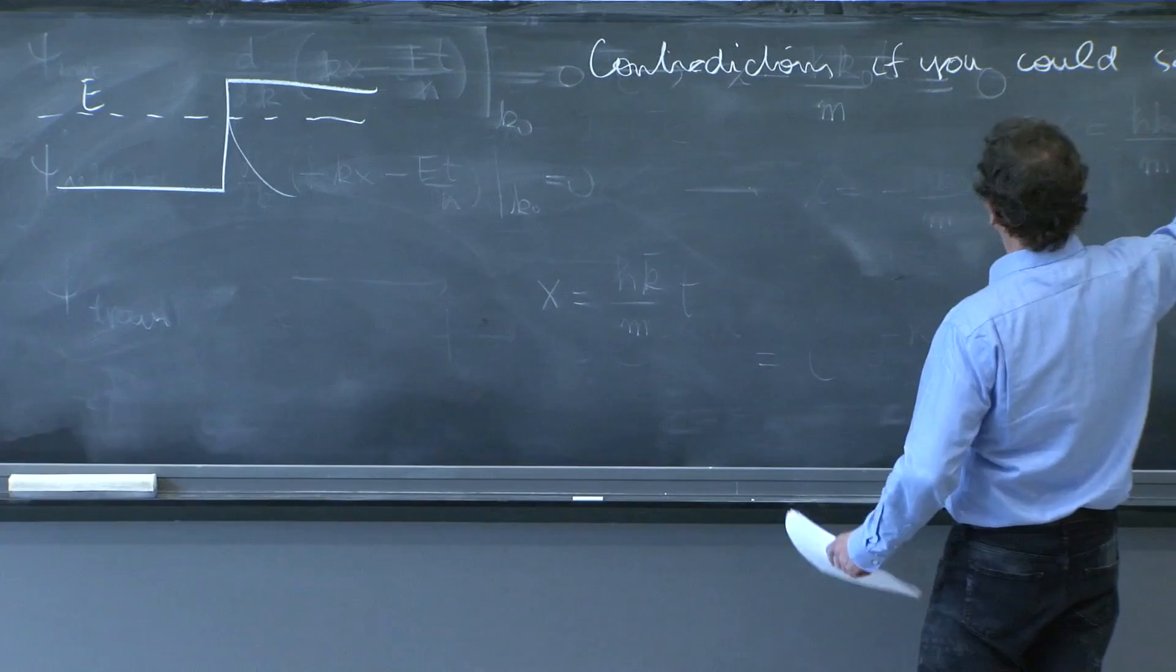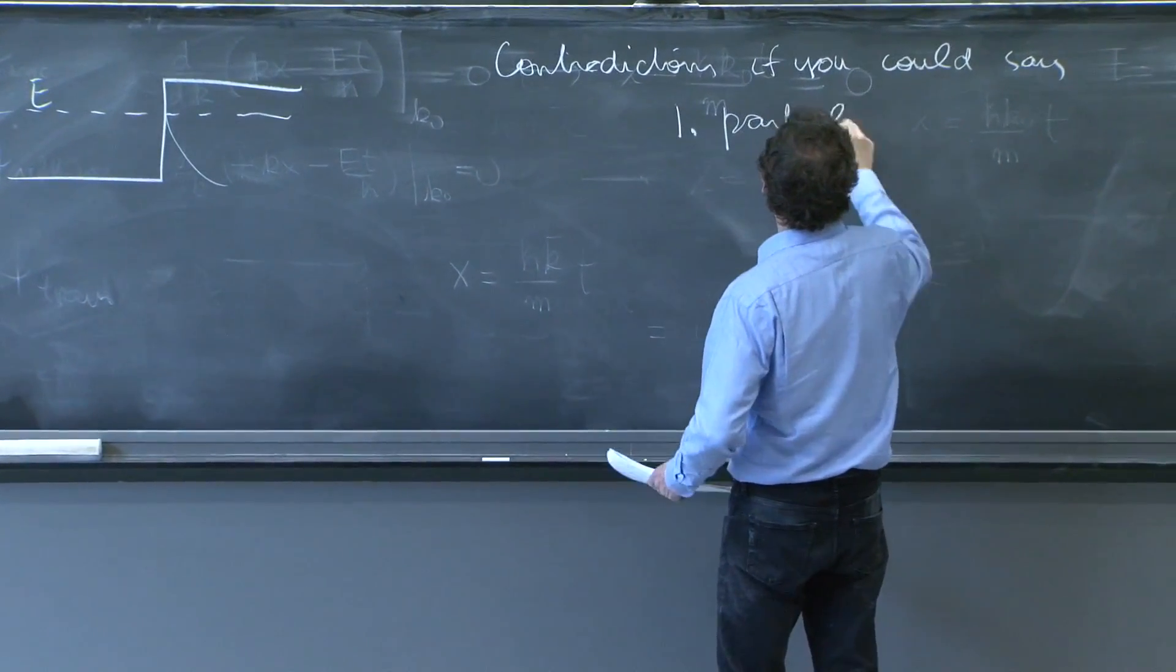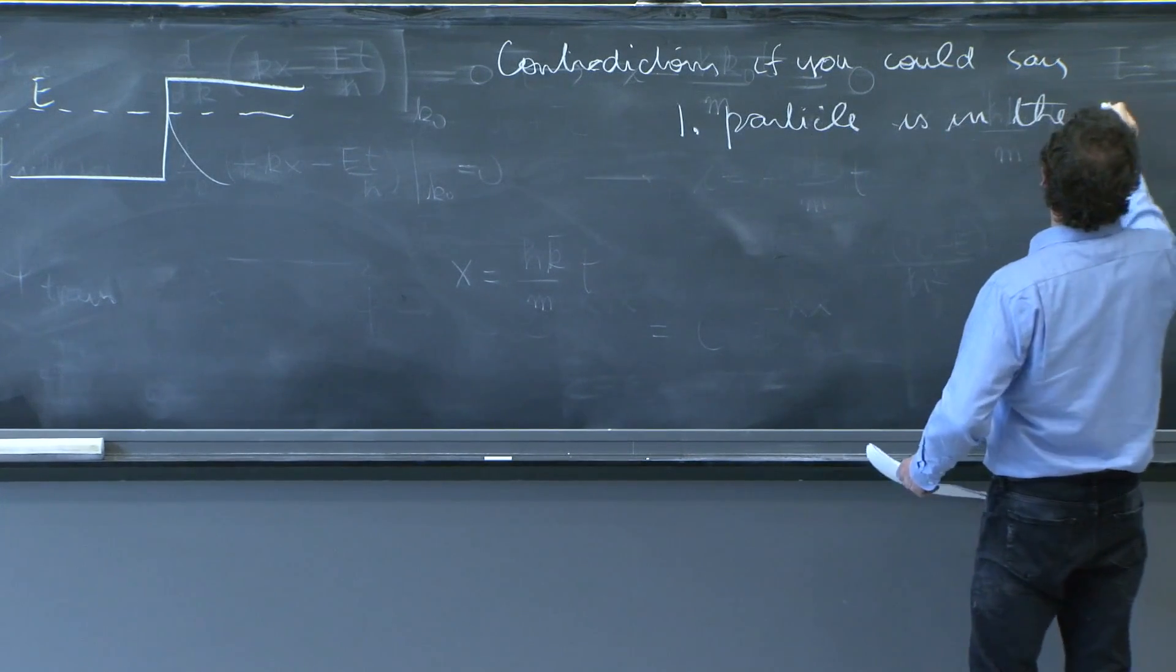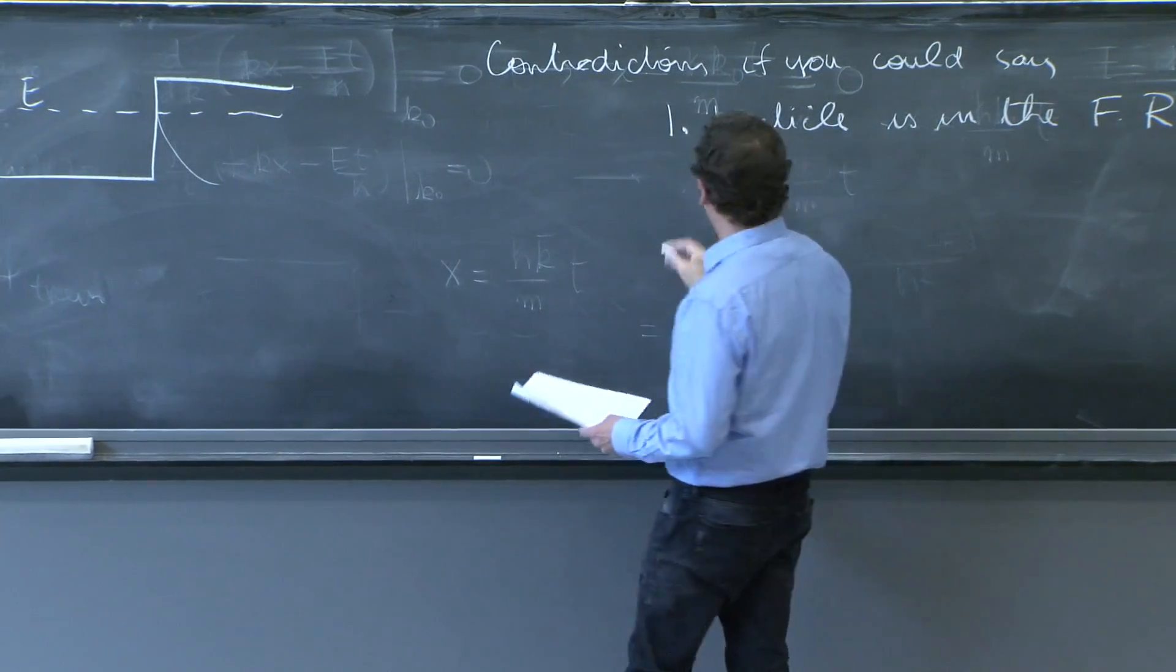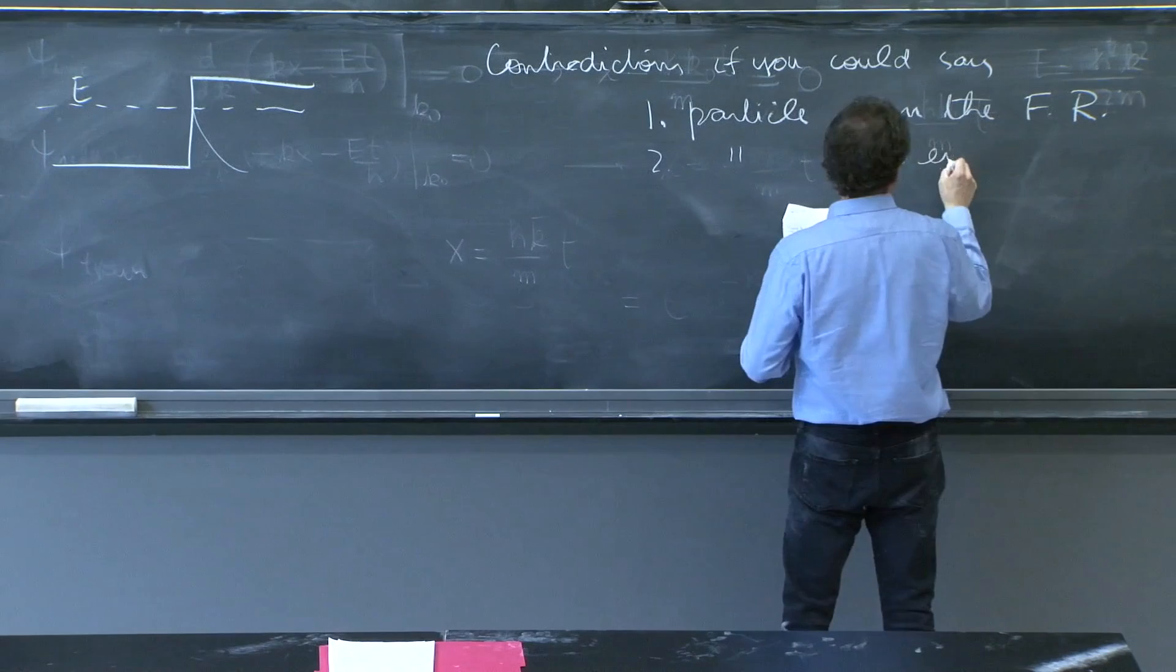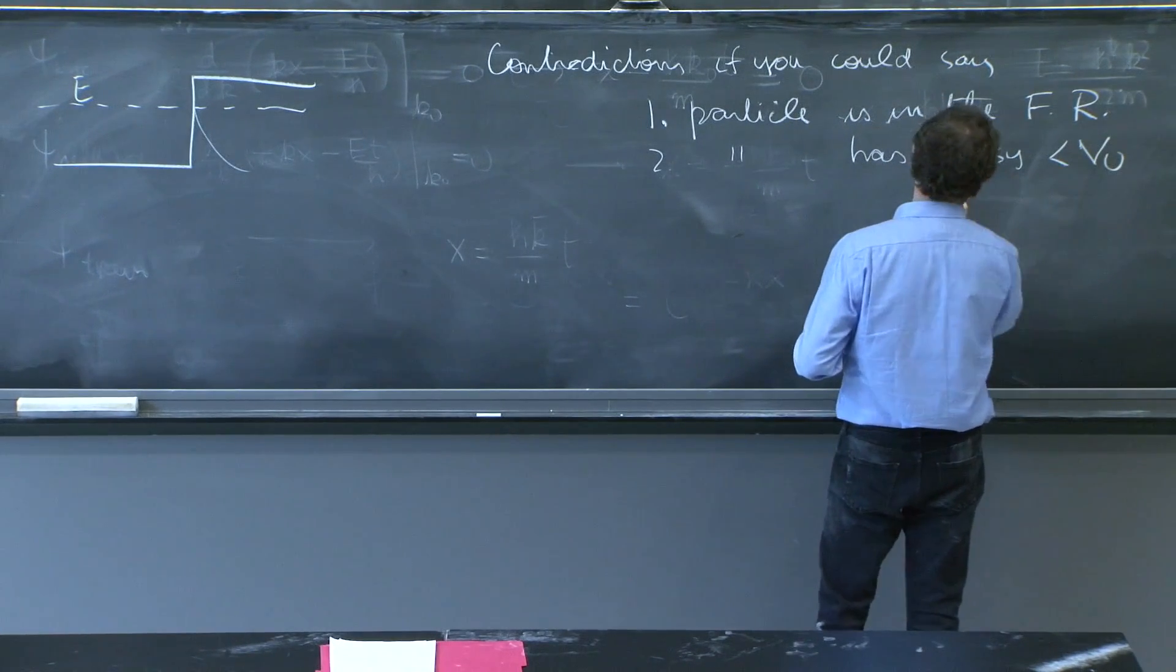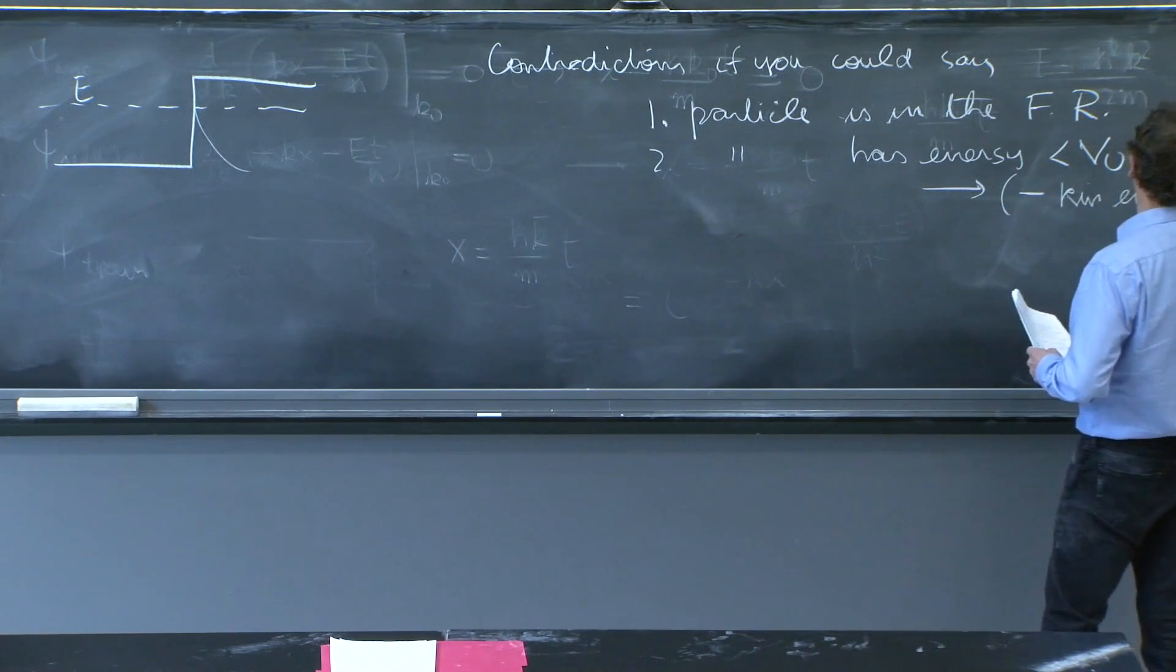One: that the particle is in the forbidden region. And two: that the particle has energy less than V₀, because then it would mean negative kinetic energy.